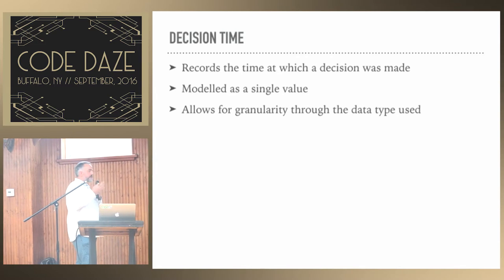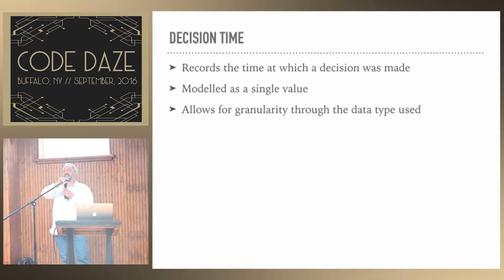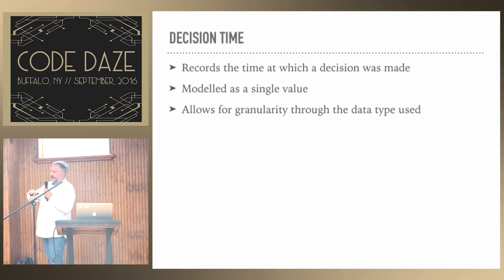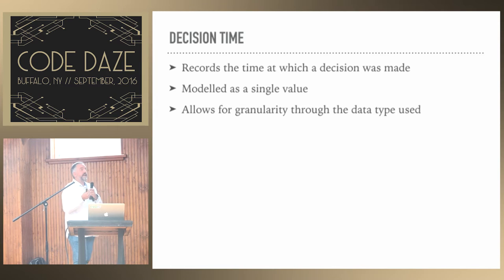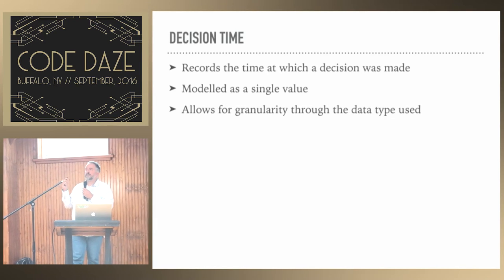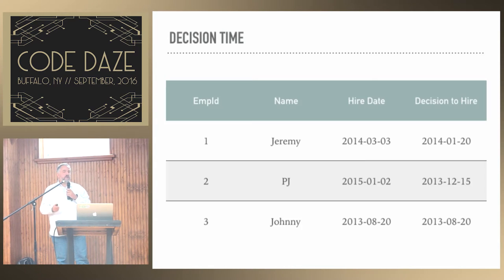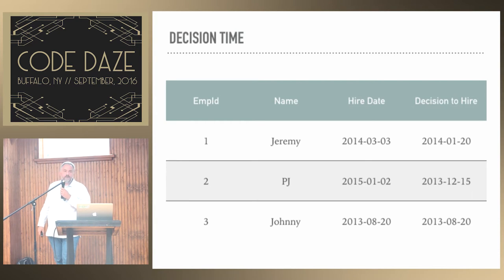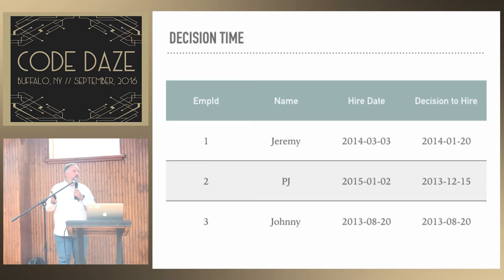For temporal theory, a fact is considered to be a single row in the database — not a single column or value, but an entire single row. Decision time is very easy to track — it's a single value. The granularity is up to you: you might want the year, or the millisecond, at which the decision was taken. You can also imagine it's extremely easy to record. Here's a simple HR example: recording employees' names, date hired, and the date the decision was taken to hire — the decision time. If you want to track decision time, you don't need anything special in the database; no special support is required. Many applications are probably doing this already.